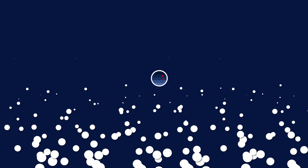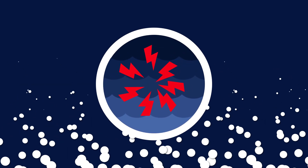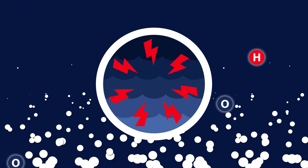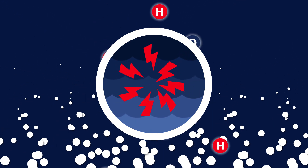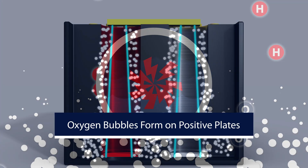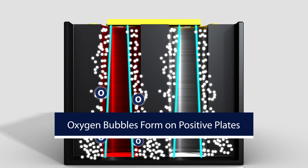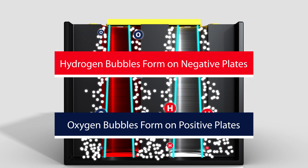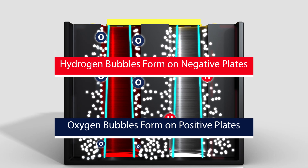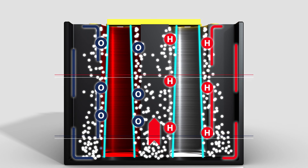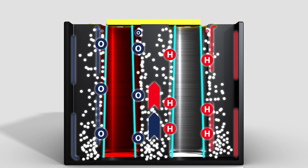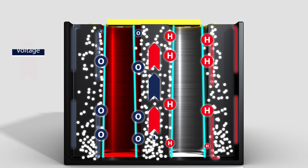At gassing voltage, charge current breaks down water and releases hydrogen and oxygen into the electrolyte. Oxygen bubbles form on positive plates and hydrogen bubbles form on negative plates. As the bubbles rise to the surface, the electrolyte solution mixes within the cell.